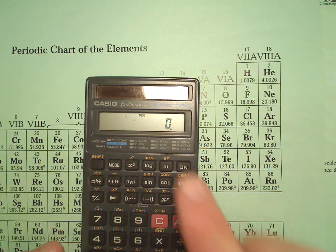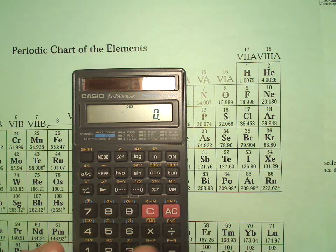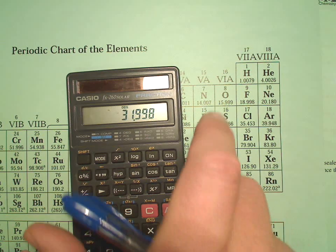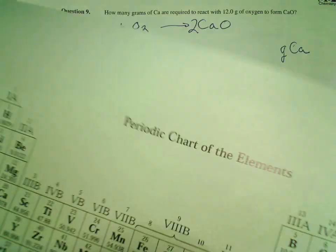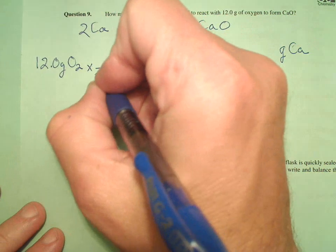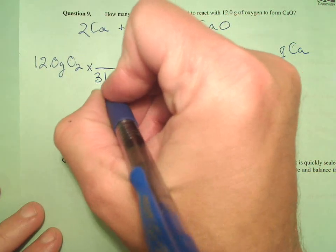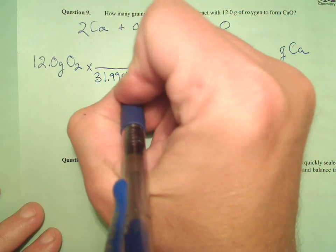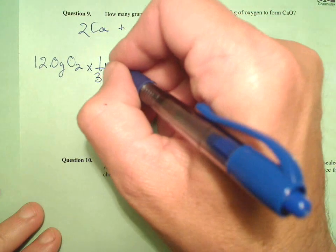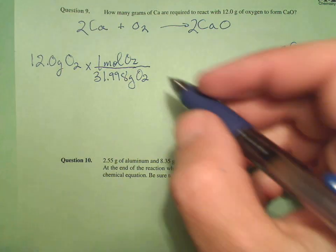15, that's kind of glary. 15.999 times 2 equals 31.998. So I know 31.998 grams of O2, there's one mole of O2. Got it into moles.